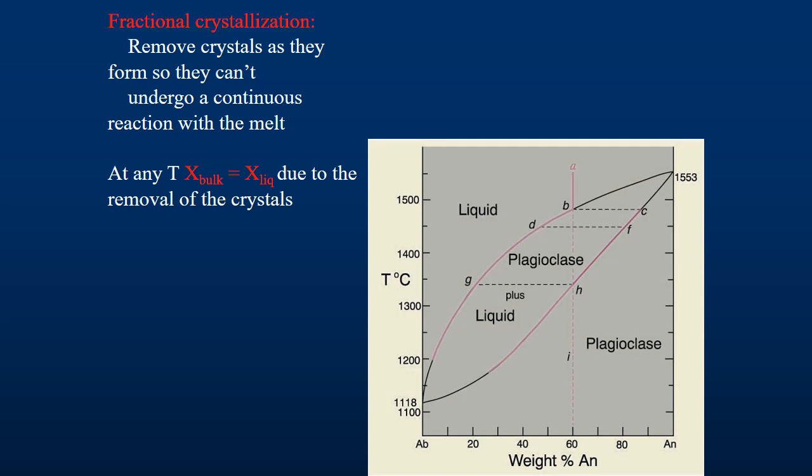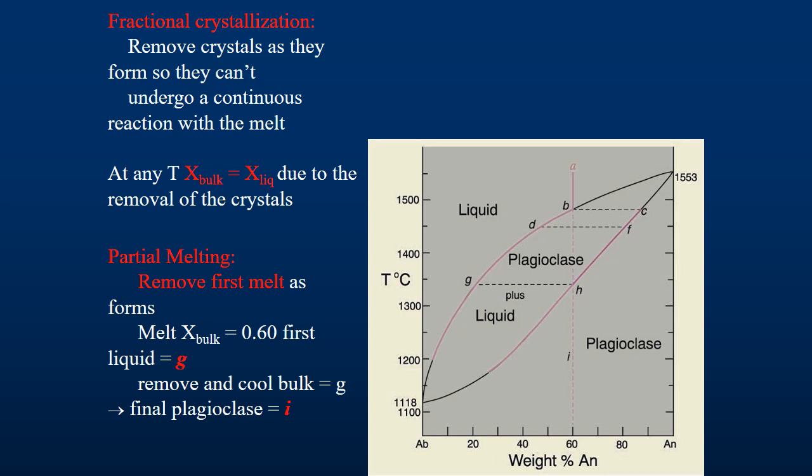If we open the system up and allow the chemical components to be removed or added, we lose chemical equilibrium. In the previous case, the plagioclase or melt that is produced remains in the system. If we open the system, these products are removed, changing the bulk composition. We'll revisit this concept over the next few lectures and spend quite a bit of time on it over the next few weeks.